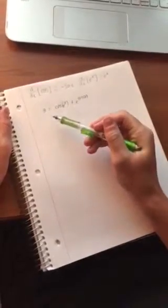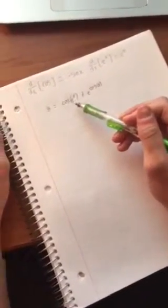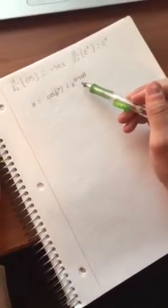Okay, so the problem we have today is y equals cosine of e to the x plus e to the cosine of x.